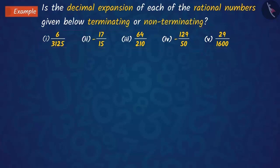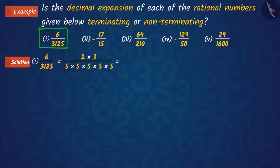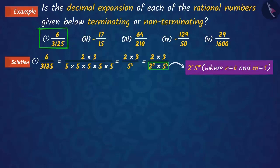Can you guess how to find this out? Pause the video and try to solve this question. If we factorise both the numerator and denominator of this first rational number, we find that the denominator is in the form of 2 raised to n into 5 raised to m.